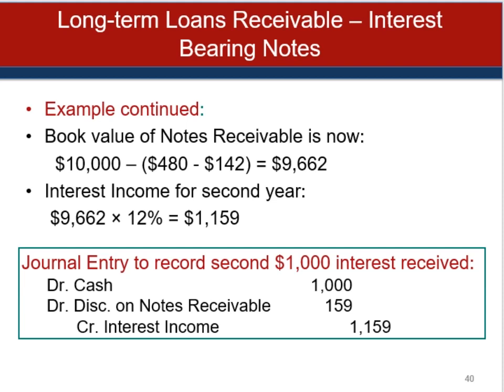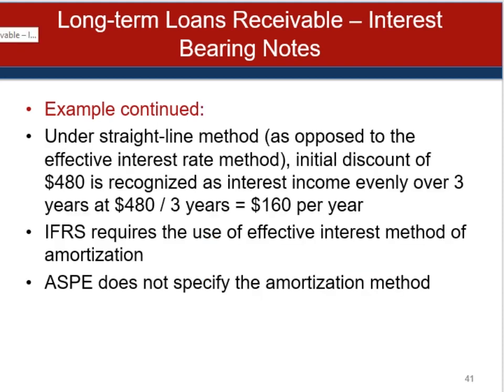If the fair value of the property, goods, or services is not determinable, estimating the present value requires use of an imputed interest rate. The choice of rate may be affected by the credit standing of the issuer, restrictive covenants, collateral, payment terms, the existing prime interest rate, and other factors — essentially looking to determine what a normal financing transaction would cost the business. The determination of the imputed interest rate is made when the note is received, and any subsequent changes in prevailing interest rates are ignored. Under ASPE you're allowed to use the straight-line method; IFRS requires the effective interest method.